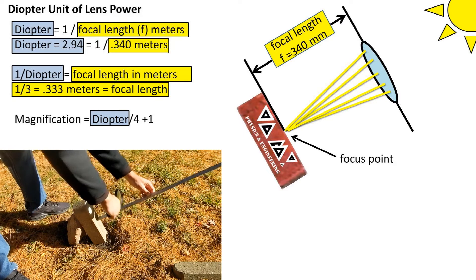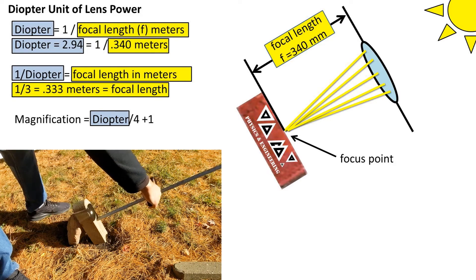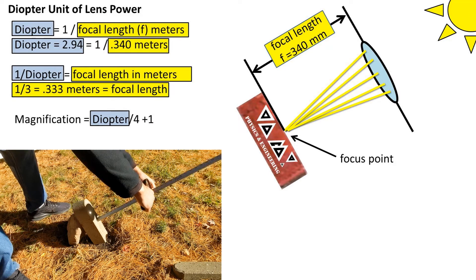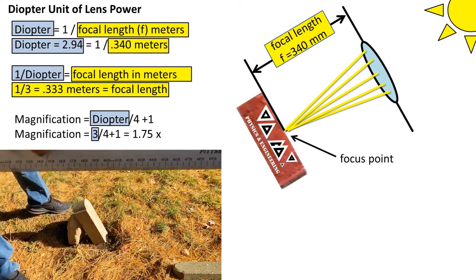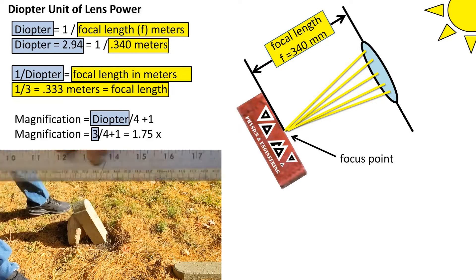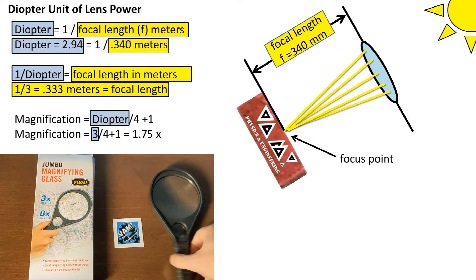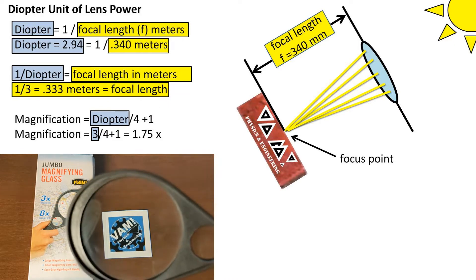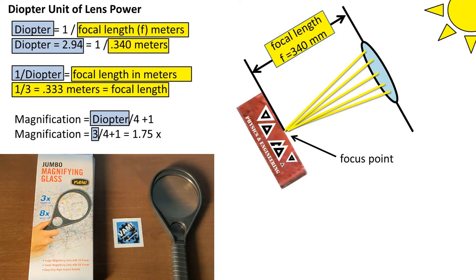Now, according to two sources on the internet, we can find the magnification by taking the diopter over 4 and adding 1. Doing so, we get a magnification of 1.75 times. So the image in the glass should be 1.75 times larger at max.